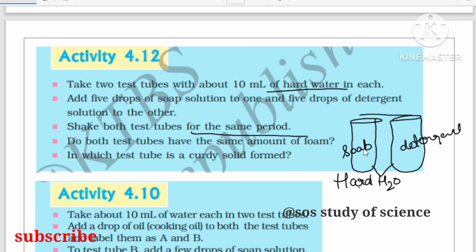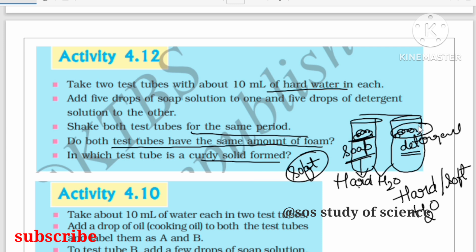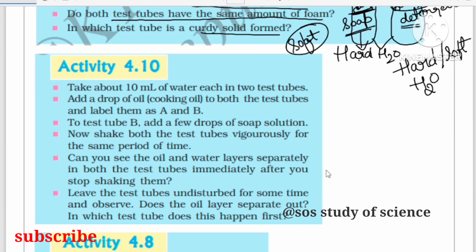Observe whether both test tubes produce the same amount of foam. In the case of detergent, there is more formation of foam. Detergent works well with both hard water and soft water. Soap, however, does not work well with hard water — it only works well with soft water. In the soap solution, you can also observe the formation of a curdy precipitate.